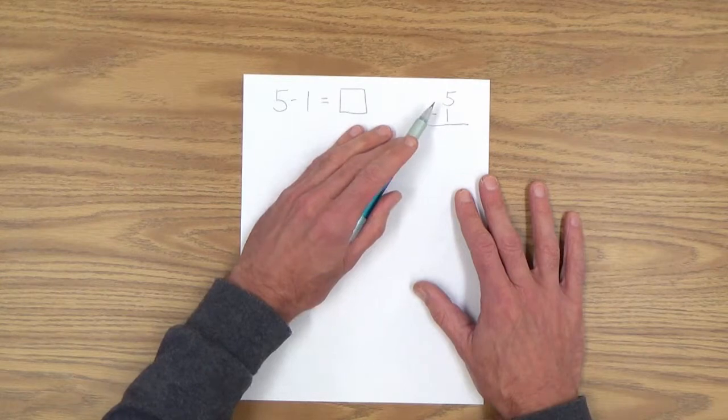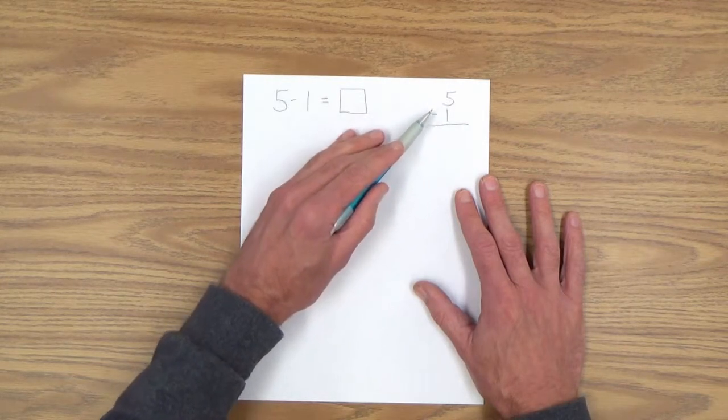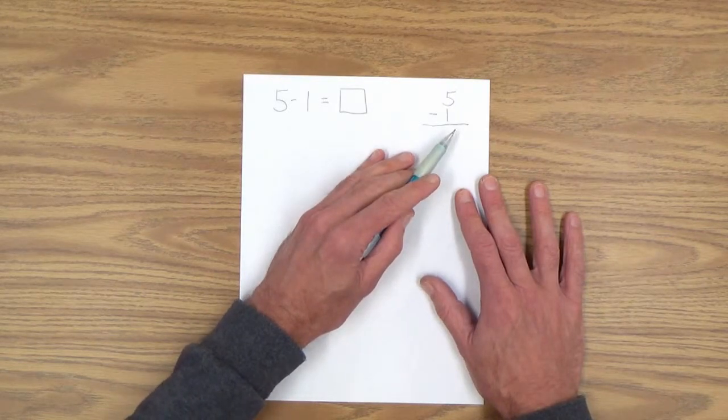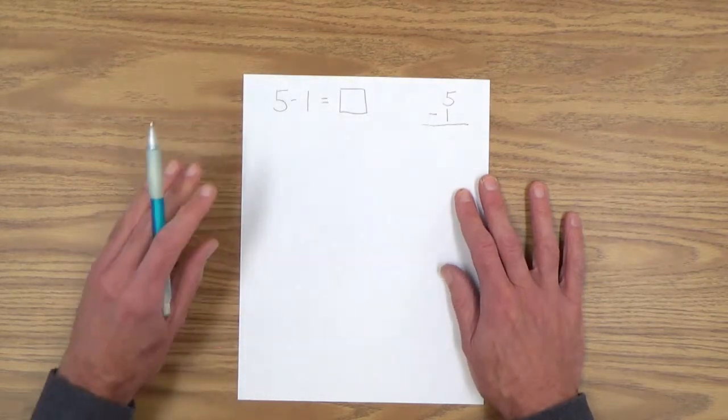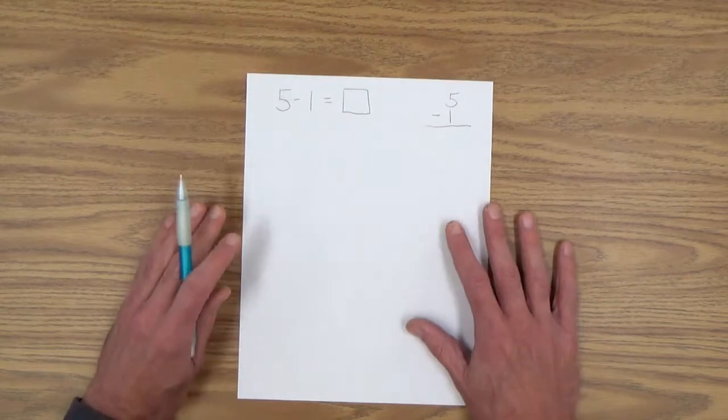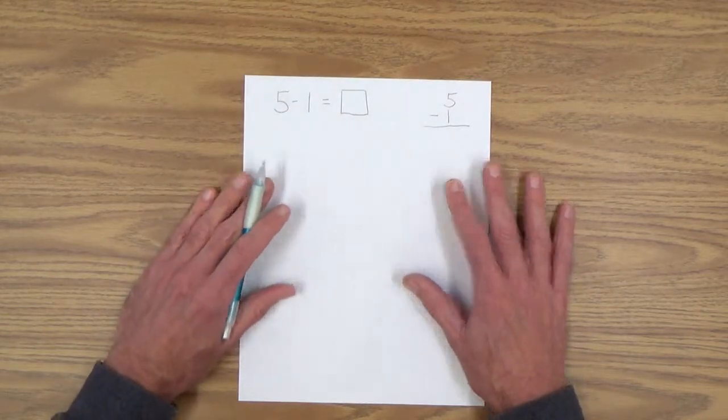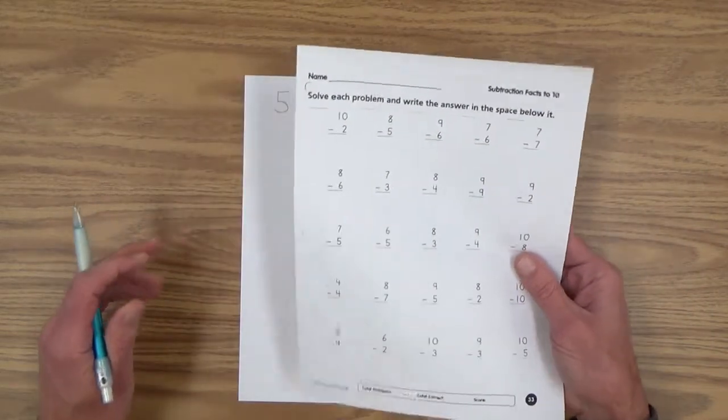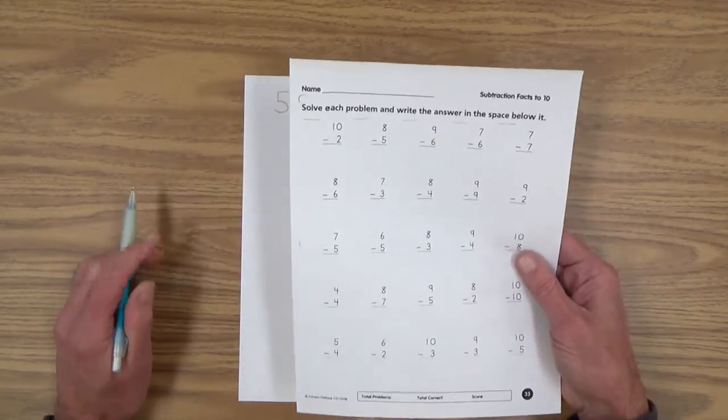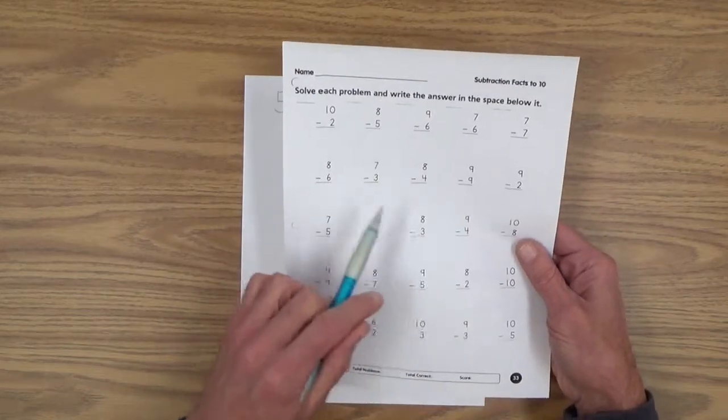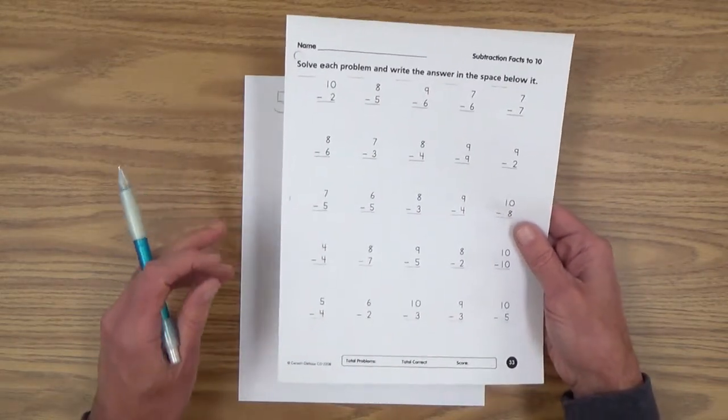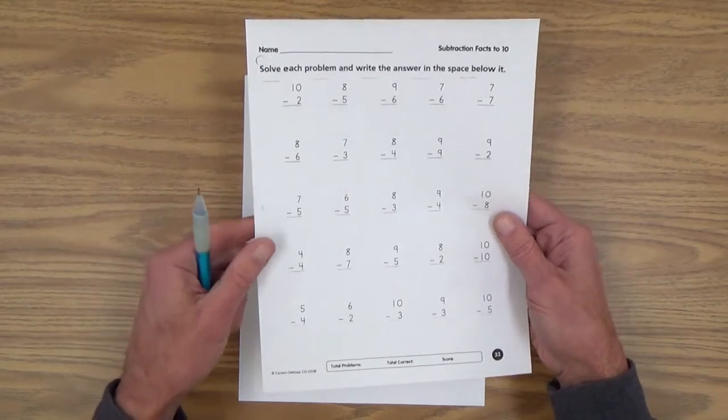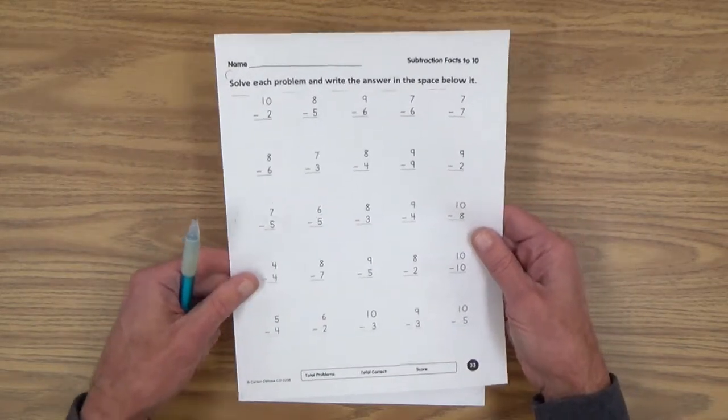You could actually go through this a few times, and then perhaps have him read it: five minus one equals how many? To further get him or her used to that, you could come back to our subtraction facts to 10 here and just have her read these off until she's very comfortable with reading this new form of subtraction, column subtraction.